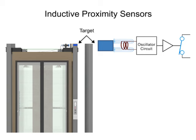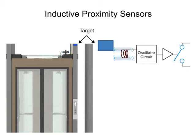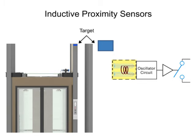This change in amplitude sends a signal to the switch, changing it to its normally open or normally closed configuration, respectively. When the metal target is removed from the sensor's range, the oscillator will return to its normal amplitude and the switch will return to its normally open or closed output.